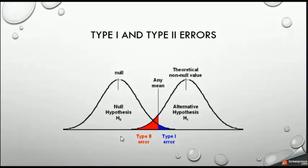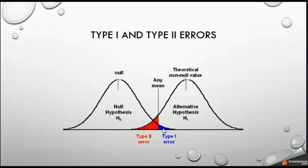Let's continue with Type 1 and Type 2 errors. Suppose this is the null hypothesis and this is a one-sided test. The value of alpha is the blue area under the curve — the probability to commit a Type 1 error is alpha. It is possible that values under this curve really belong to this curve. Alpha represents the Type 1 error, which is rejecting the null hypothesis when the null hypothesis is true — values in the rejection area that really belong to the original distribution.